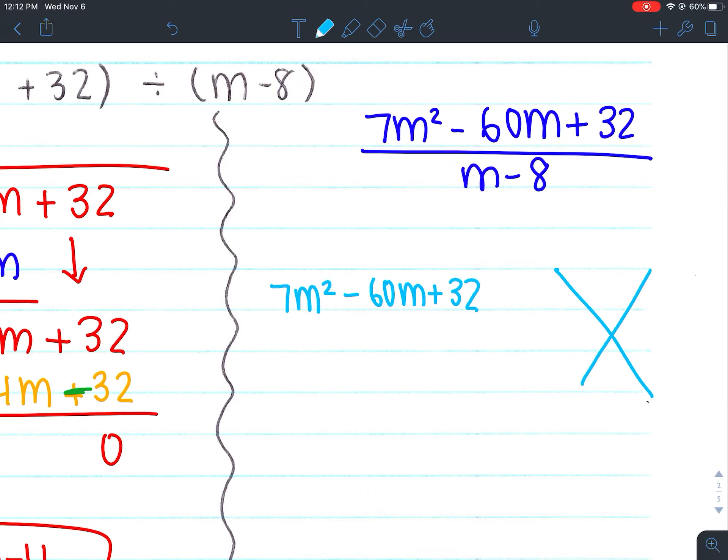So AC method, do A times C. So that would be 7 times 32. And that's going to give me 224. And I want it to add to -60, my two factors. This would be a good time to use that calculator trick to find those two factors. And so those two factors would be 56 and 4, but you need -56 and -4.